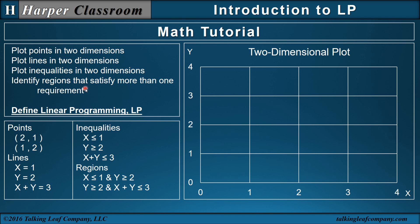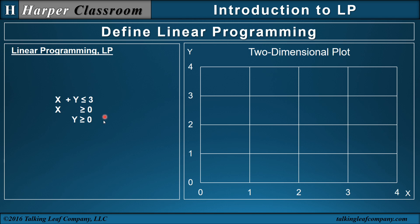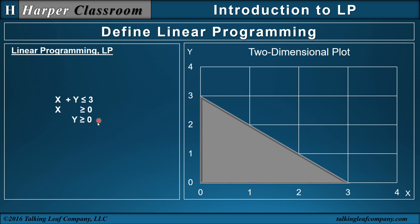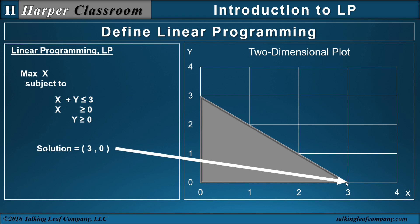So now let me take this simple math tutorial and define a linear program. Let's start with these three inequalities. If I plot all three of these, this region of points will satisfy all three simultaneously. Of all these points in this region, which point or points will yield a maximum for the value of x? The maximum x can be is that point right there — (3, 0). So this is called a linear program, abbreviated LP, and that point is the solution to this LP.